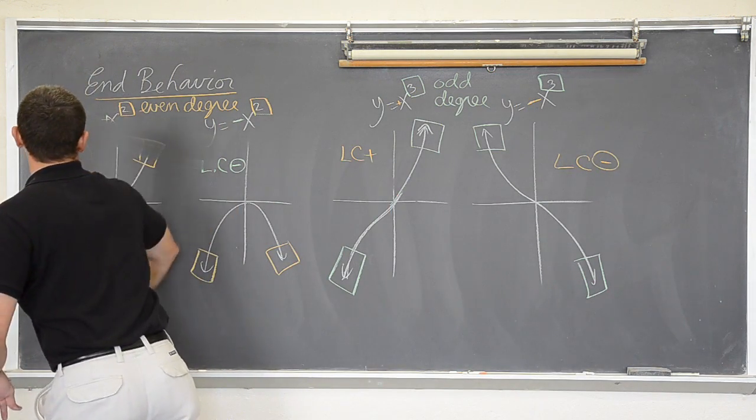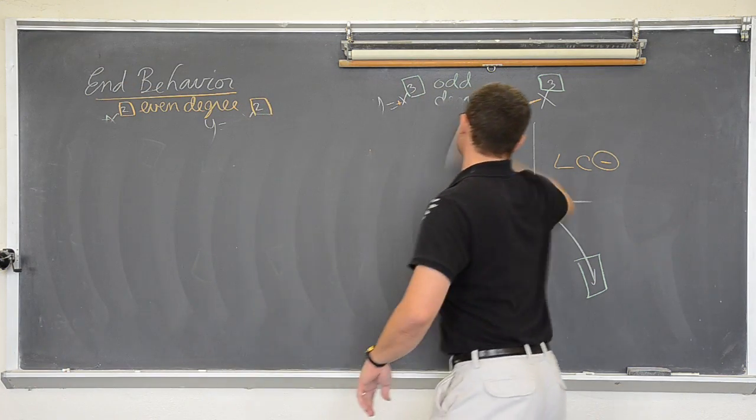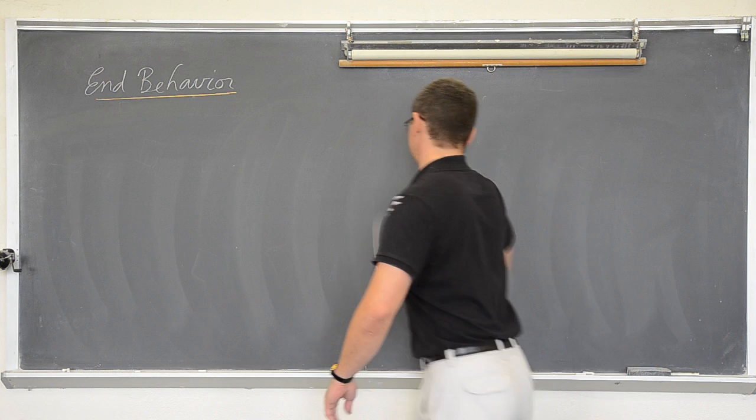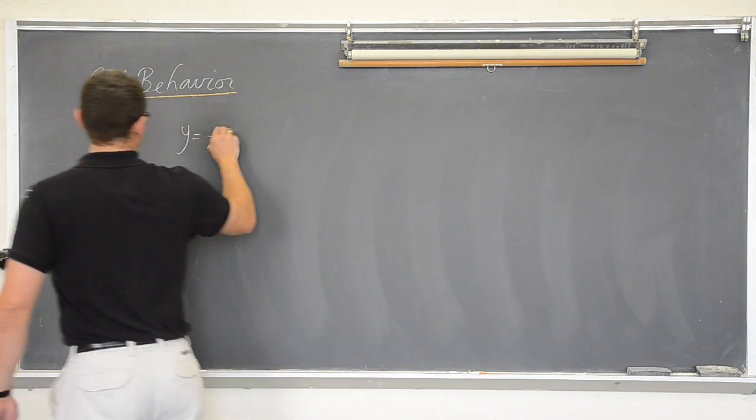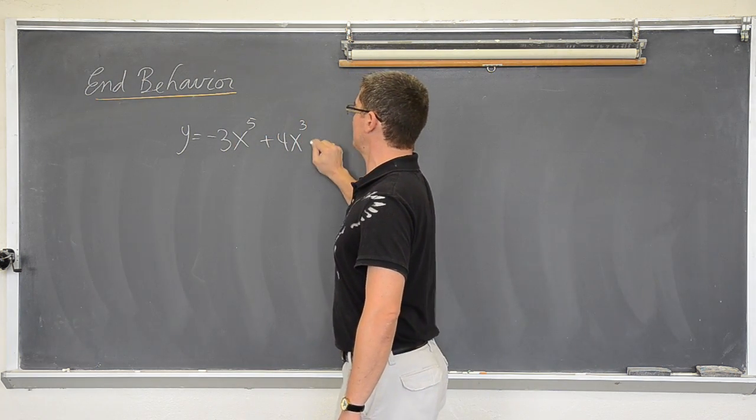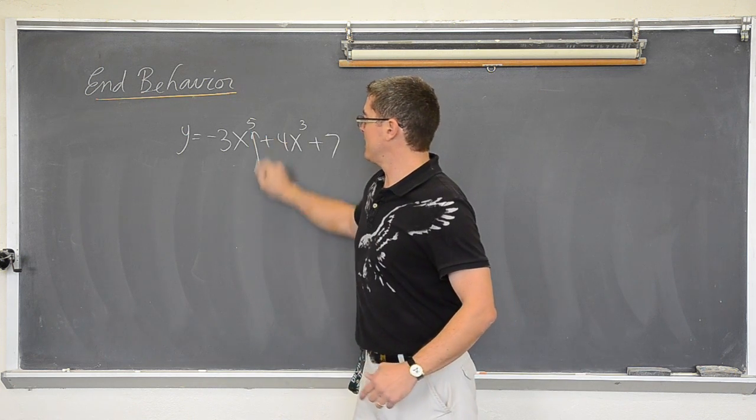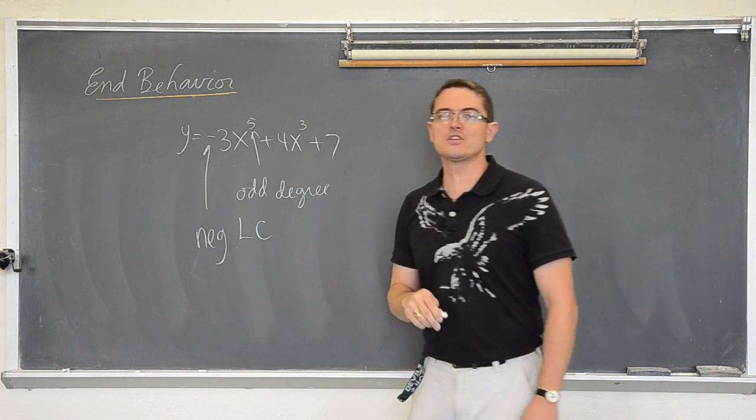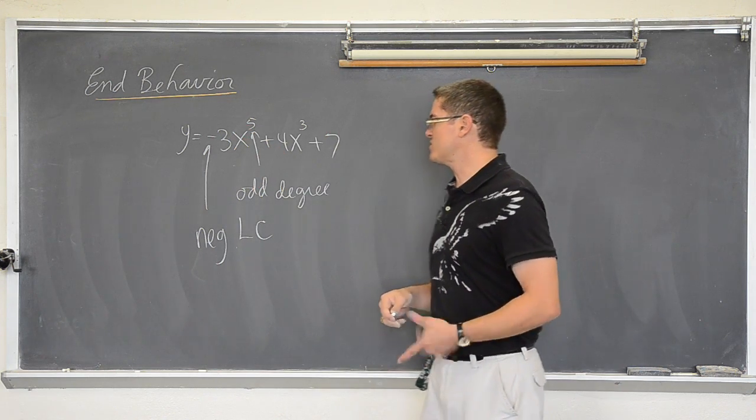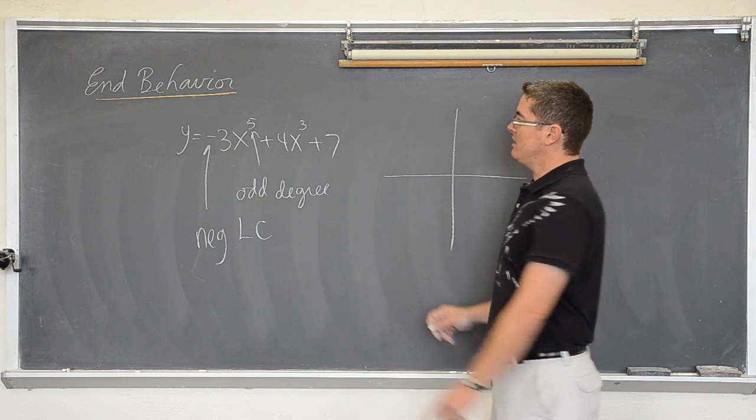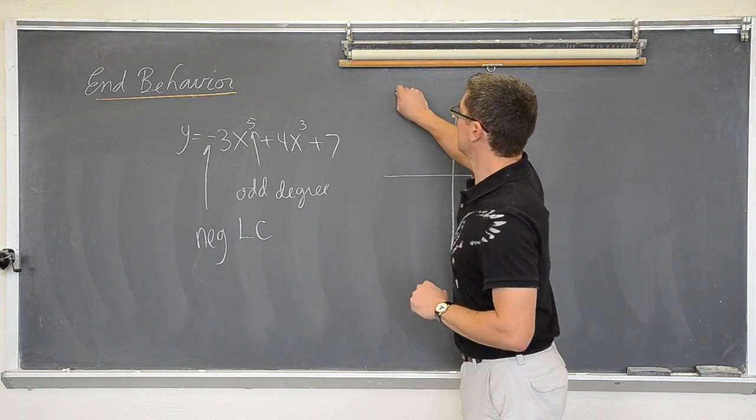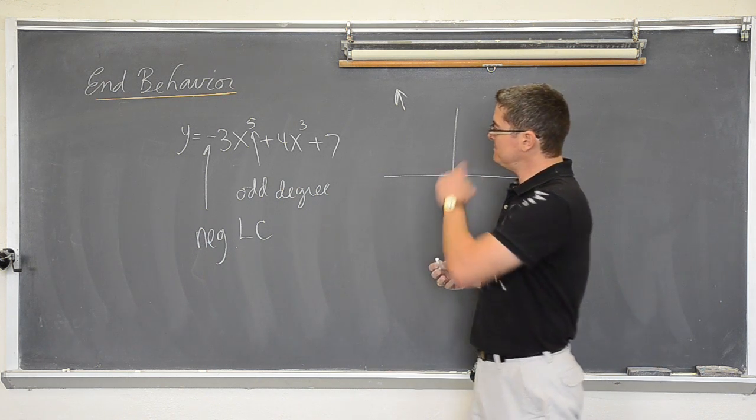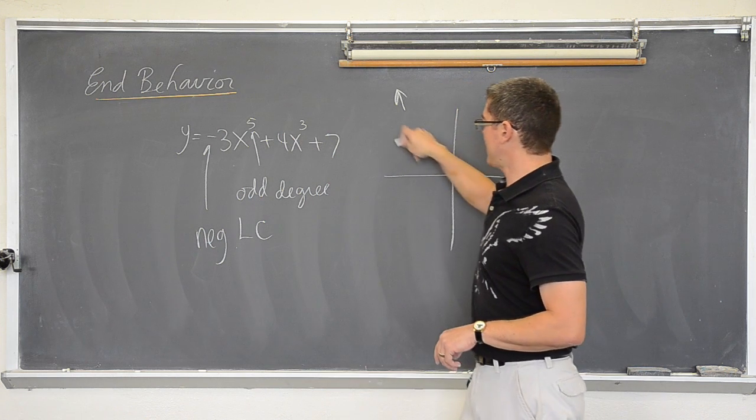An example of that would be, what is the end behavior of this? Y equals negative 3x to the fifth plus 4x cubed plus 7. Well, this has an odd degree and it has a negative leading coefficient. That is a fifth degree. There might be all kinds of bends in there. But I do know that the end behavior is going to be flipped and odd. So it is going to be going up to the left and down to the right. And what happens in the middle? Well, that is yet to come. But this power of 5 is going to have a lot of bends in the middle of this graph.